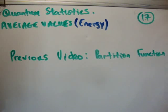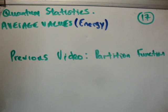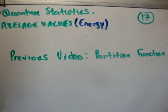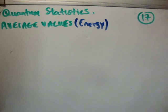In this video I'm going to continue on my tutorial series on quantum statistics and we're going to move on to calculating the average values of energy. This is tutorial number 17 and the previous video to this is the partition function. So what we're going to do is calculate the average values using both the partition function and the Boltzmann factor.